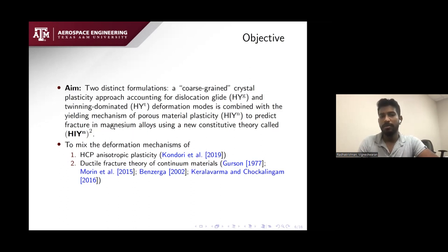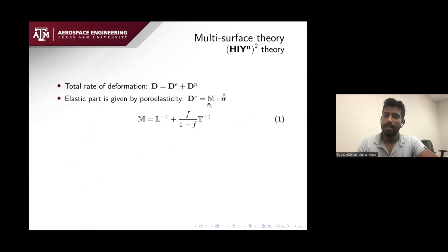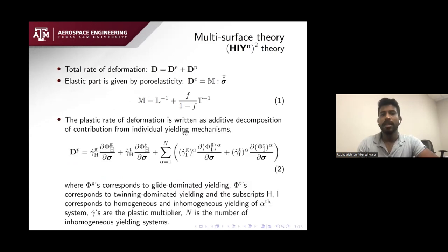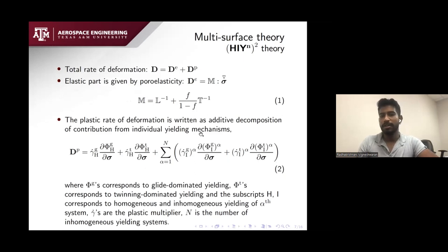Combining these two theories, we develop a new theory called Hi-Ny², which accounts for two deformation modes such as glide and twin. In the multi-surface theory, the total rate of deformation is additively decomposed into elastic and plastic parts. The elastic part is given by hypoelasticity where M is the elastic compliance tensor, a function of isotropic stiffness tensor and void attributes through the HLB tensor. The plastic rate of deformation is written as contributions from individual yielding mechanisms: glide homogeneous yielding, twin homogeneous yielding, glide inhomogeneous yielding, and twin inhomogeneous yielding, with n number of highway systems.